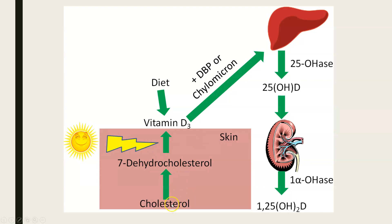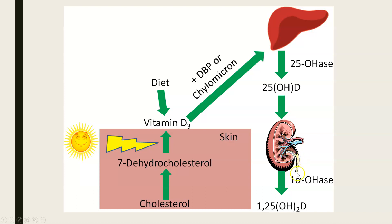In the synthesis diagram: sunshine acts on the skin converting cholesterol to 7-dehydrocholesterol and then to vitamin D. Alternatively, vitamin D can come from dietary supplements or fortified milk. Vitamin D is carried in the blood via chylomicrons or vitamin D-binding protein to the liver, which converts it to 25-hydroxyvitamin D. That then travels to the kidneys, which convert it to 1,25-dihydroxyvitamin D — the active form of vitamin D.